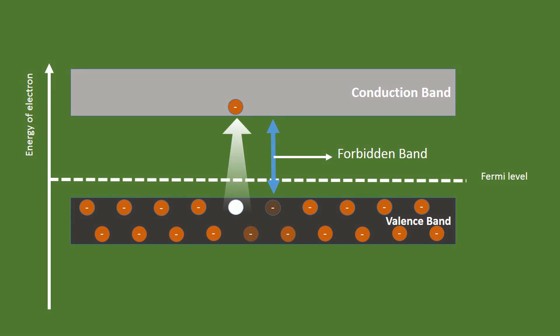When electrons jump from the valence band to the conduction band, it leaves a hole in the valence band.